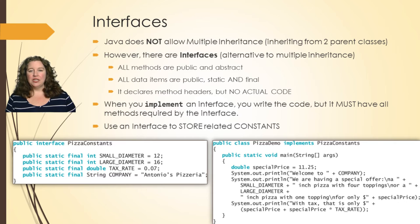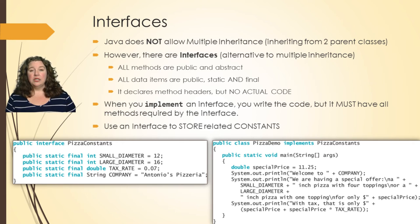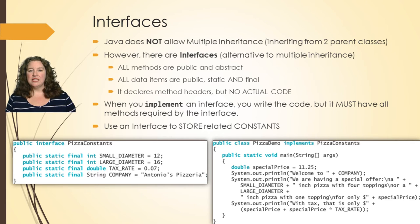You don't use interfaces for data items that are unique to each class object. If I had a salesperson class, I would not use an interface because I want different values for each ID and each sales amount. However, if I have final details like the number of cards in a deck or the name of my company, those can be static and final. Below we have pizza constants — the diameter of small versus large, the tax rate, the company name — these are things you can put into an interface.